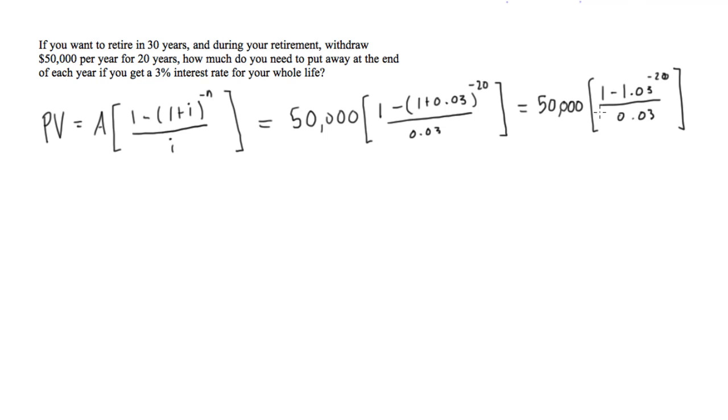If you calculate the rest of this in your calculator, you will find that the present value is going to equal $743,873.74. This is the amount of money that you're going to need in your bank account the day that you retire so that you can withdraw $50,000 per year for 20 years, providing that you're still making a 3% interest rate on this investment.